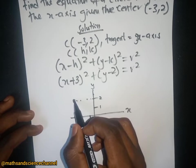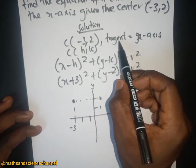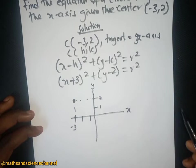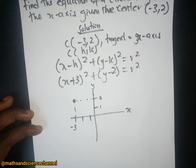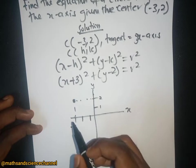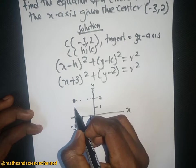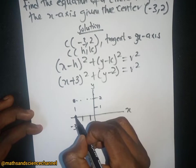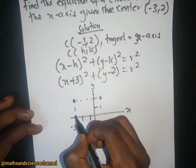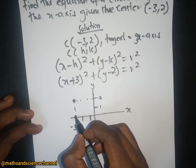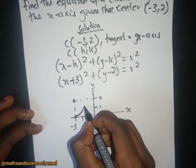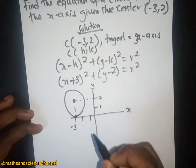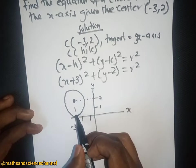Since it intercepts over here, it is tangent to the x-axis. What does it mean for something to be tangent to the x-axis? It means the circle must touch exactly one point on the x-axis. So we draw the circle — it touches one point on the x-axis.